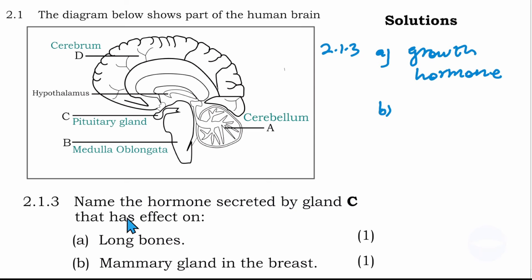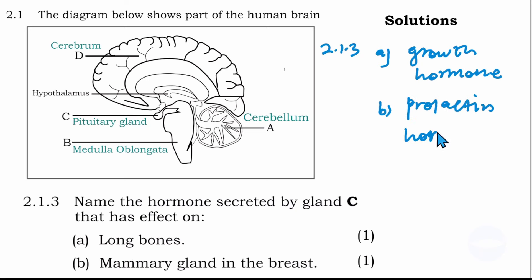For answer B, we need the name of the hormone secreted by the pituitary gland that is responsible for the mammary gland in the breast. That hormone is called prolactin. Prolactin is responsible for producing milk after a woman has given birth. Those are the answers for question 2.1.3.